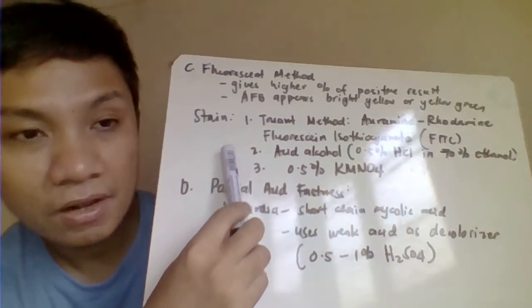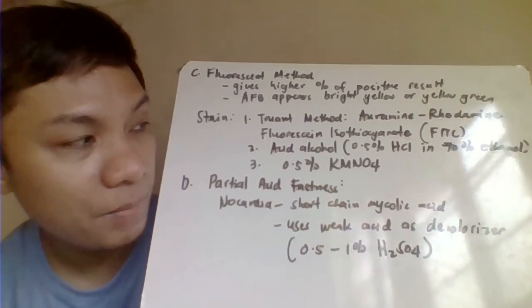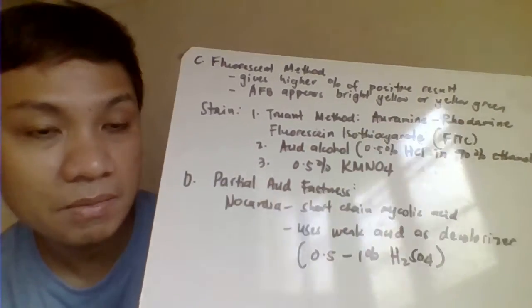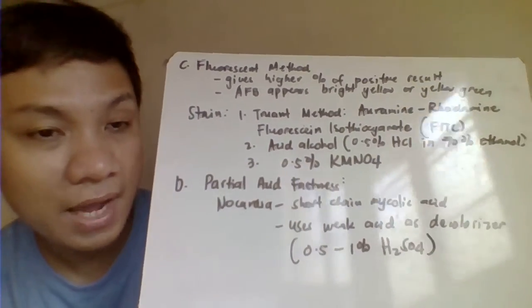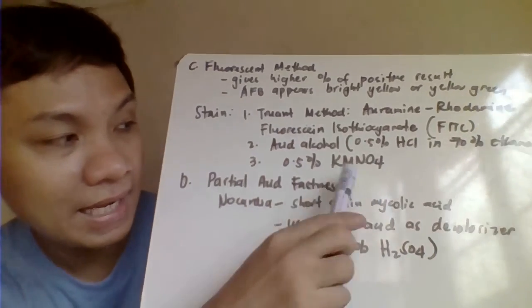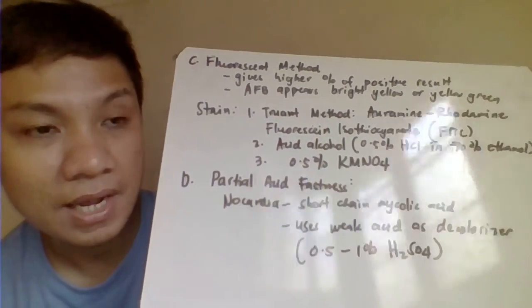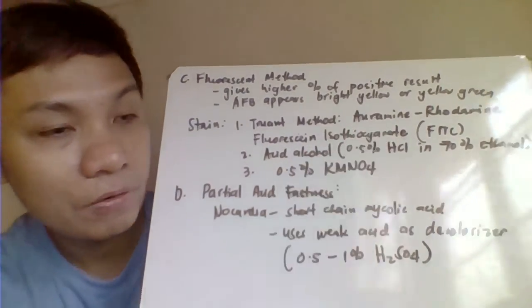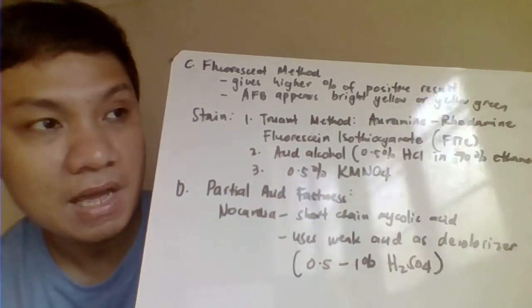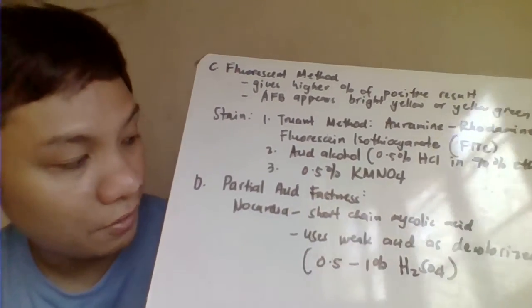Then we have your decolorizer. We have your acid alcohol, 0.5% hydrochloric acid, 7% ethanol. Then you're also adding here your potassium permanganate. So ganun lang din siya. Identifying here as your yellow, yellow-green acid-fast bacilli versus here your non-acid-fast bacilli, which is not your yellow no color.